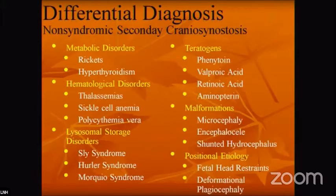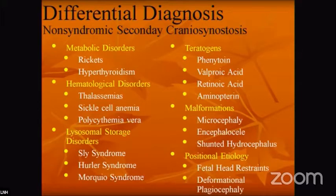Other causes include metabolic disorders, hematological conditions, lysosomal storage diseases, and teratogens — especially phenytoin, valproic acid, and other drugs — which can also lead to this condition. These are other causes of syndromic synostosis, including malformations like microcephaly, encephalocele, and positional causes, which are common in cases of prolonged illness in childhood. Feeder head restraints and deformational plagiocephaly are also recognized causes.